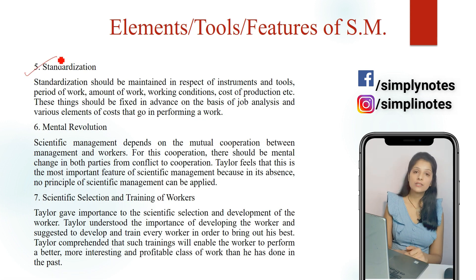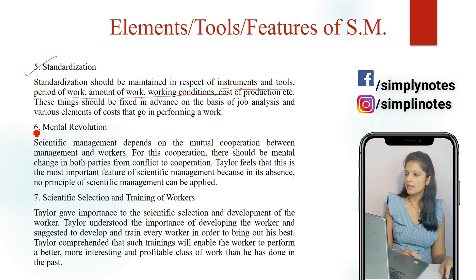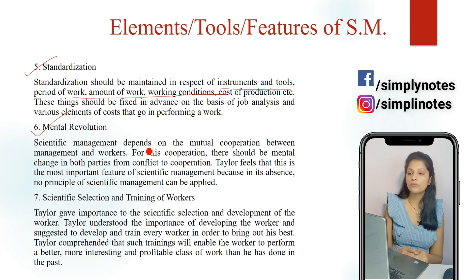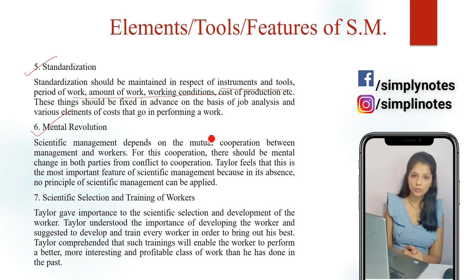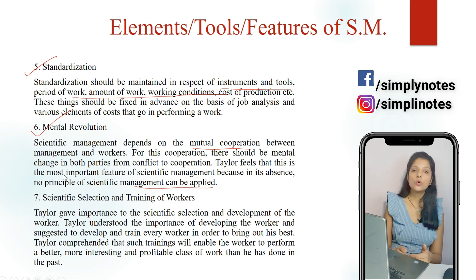The fifth feature is standardization. By standardization, Taylor implied the importance of having raw materials, tools, techniques, working conditions, etc., of uniform and reasonably good quality so that the final output is reasonably good. The sixth feature is mental revolution, which means changing the mental attitude of workers and employers towards each other. If both attitudes are negative, the other principles of scientific management will also be difficult to apply. Dono ke beech cooperation hona chahiye taaki organization apne objectives — like maximum productivity and prosperity — accomplish kar sake.